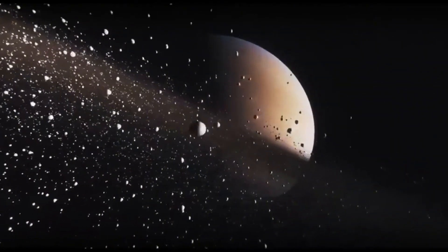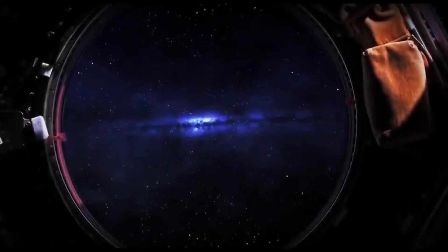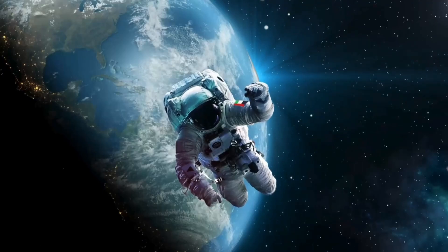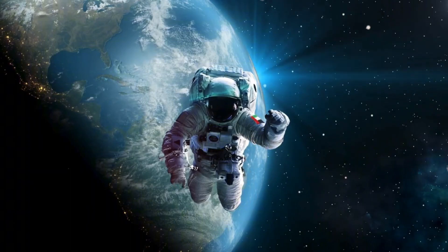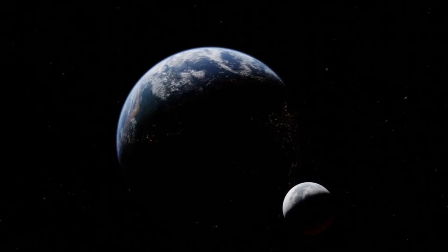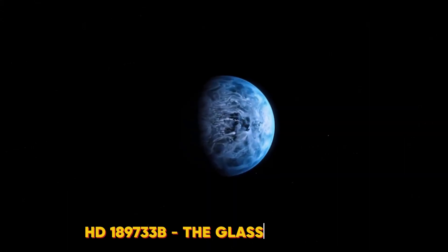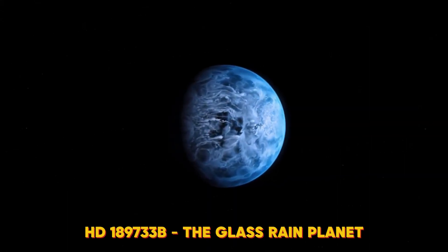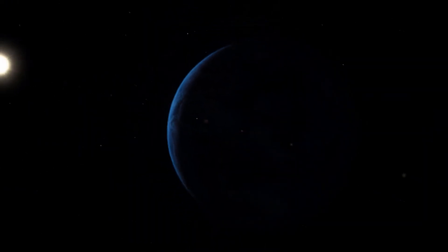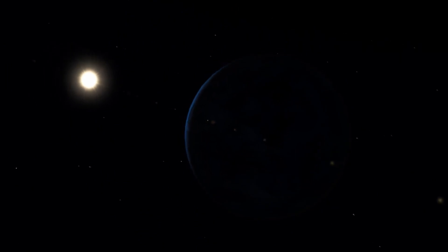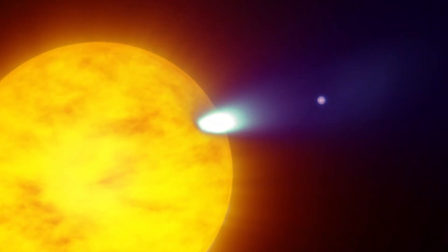All right, let's start our cosmic tour with a planet straight out of your worst weather nightmares. Imagine that you're floating above a deep blue world. It looks almost like Earth from a distance. But as you get closer, you realize this is no paradise. Welcome to HD 189733b, the glass-rain planet. This hot Jupiter orbits its star in just 2.2 days.